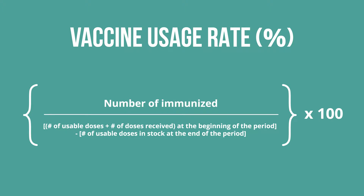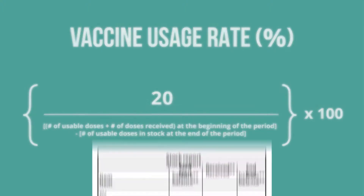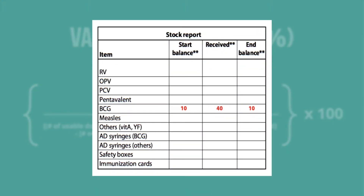First, you will calculate your vaccine usage rate. Since you immunized 20 infants last month, that number goes into the numerator position. For the denominator of the vaccine usage rate, refer to the data in your stock records.